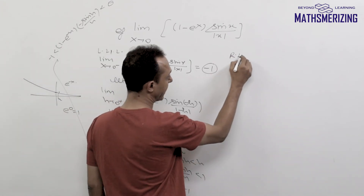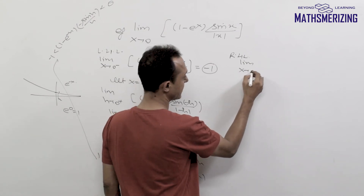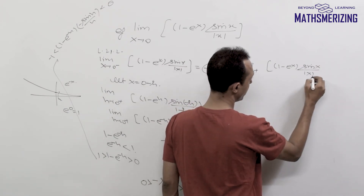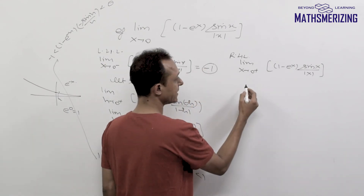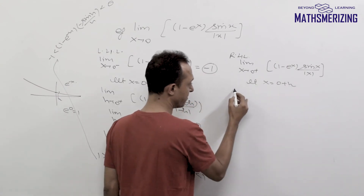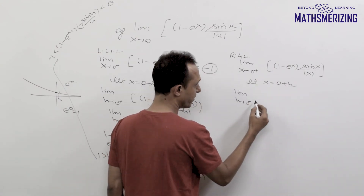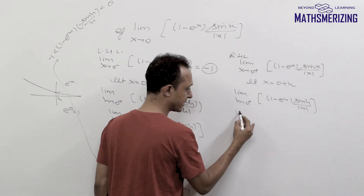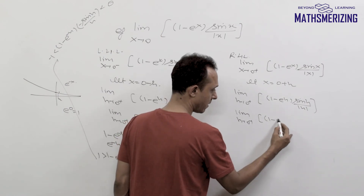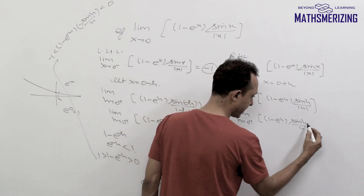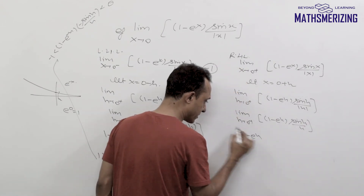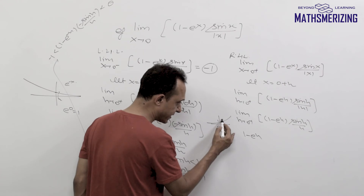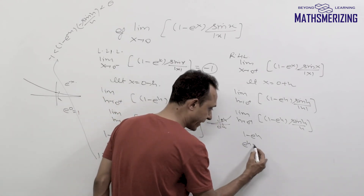Now I'll solve the right-hand limit. I can write it as limit x tends to 0 positive, greatest integer function of (1 minus e to the power x) times sin x upon mod x. I'll let x equals 0 plus h, so it becomes limit h tends to 0 positive. For the graph of e to the power x, e to the power 0 is 1, and for a small positive h, e to the power h is greater than 1. So 1 minus e to the power h is less than 0 but greater than minus 1.